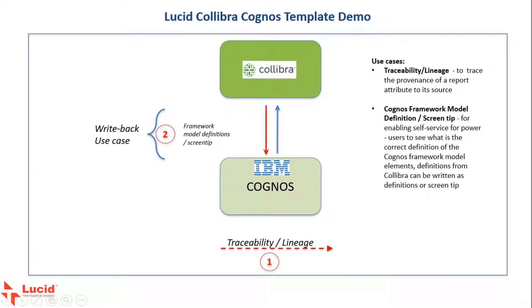Hello everyone. In this video we will look at the features of Lucid's Collibra Cognos template. The Lucid Collibra Cognos template loads Cognos metadata into Collibra. We will look at how the Cognos metadata is organized in Collibra and how the lineage is presented across dependent Cognos elements when the assets are loaded.